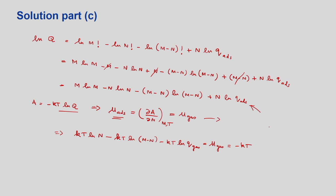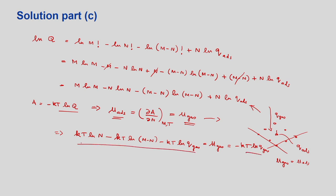Now, mu_adsorbed equals mu_gas because the system is at equilibrium. Why? Because these are the sites where gas molecules come and adsorb — Q_gas is the partition function of the gas phase and Q_adsorbed is the partition function of the adsorbed phase. So mu_gas = mu_adsorbed. And mu_gas = -kT*ln(Q_gas). So equating these two expressions, kT cancels out and you get N/(M-N) = Q_adsorbed / Q_gas. This is the relation between fractional coverage and the partition functions.